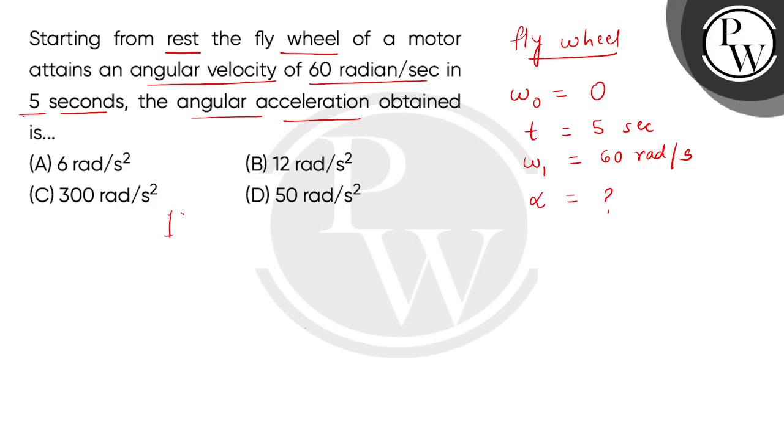So here we will use the first kinematical equation for the dynamics of circular motion, which is ω₁ equals ω₀ plus αt. So here we have the values: 60 equals 0 plus 5α.